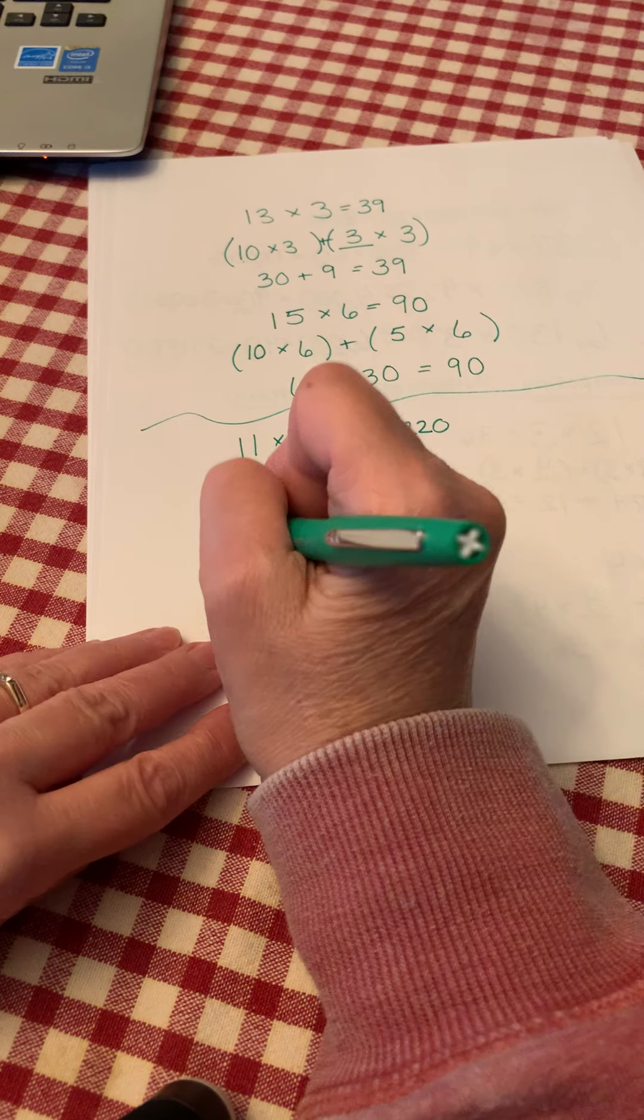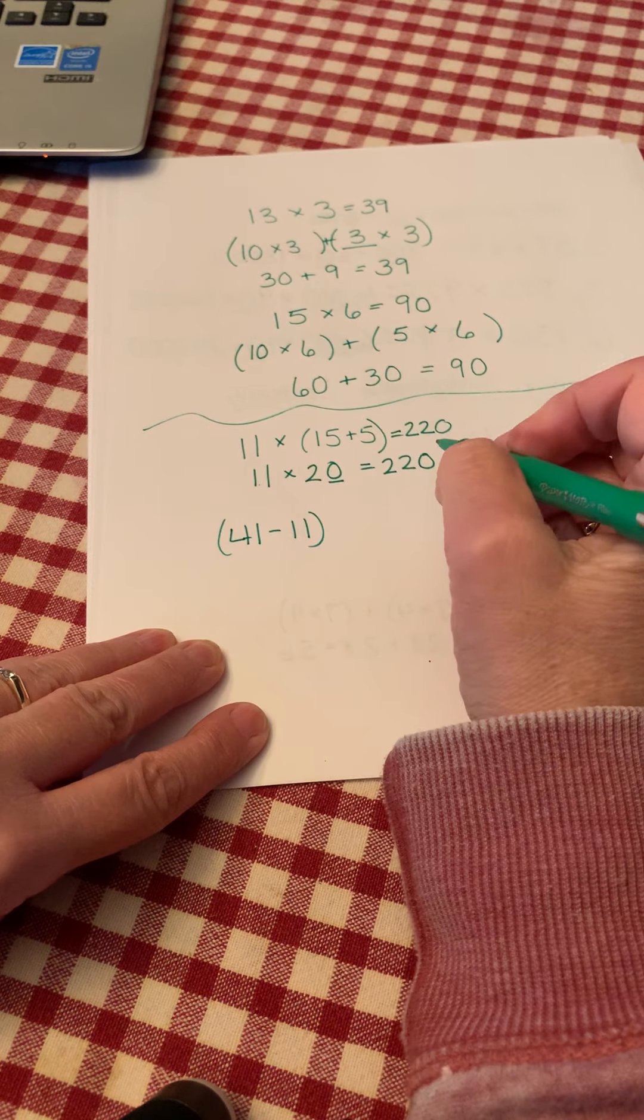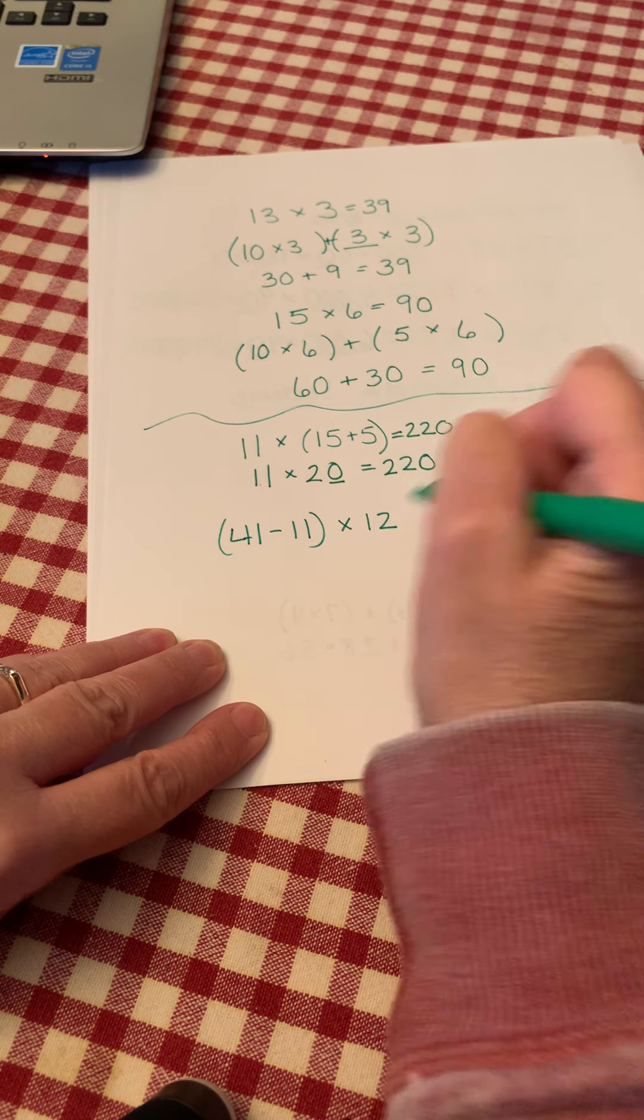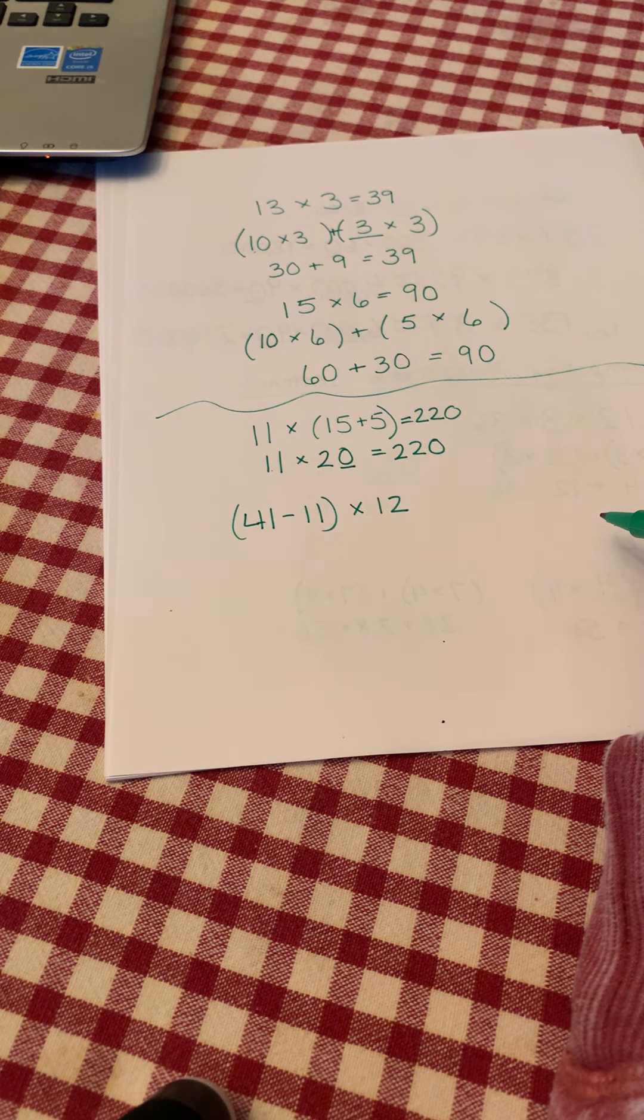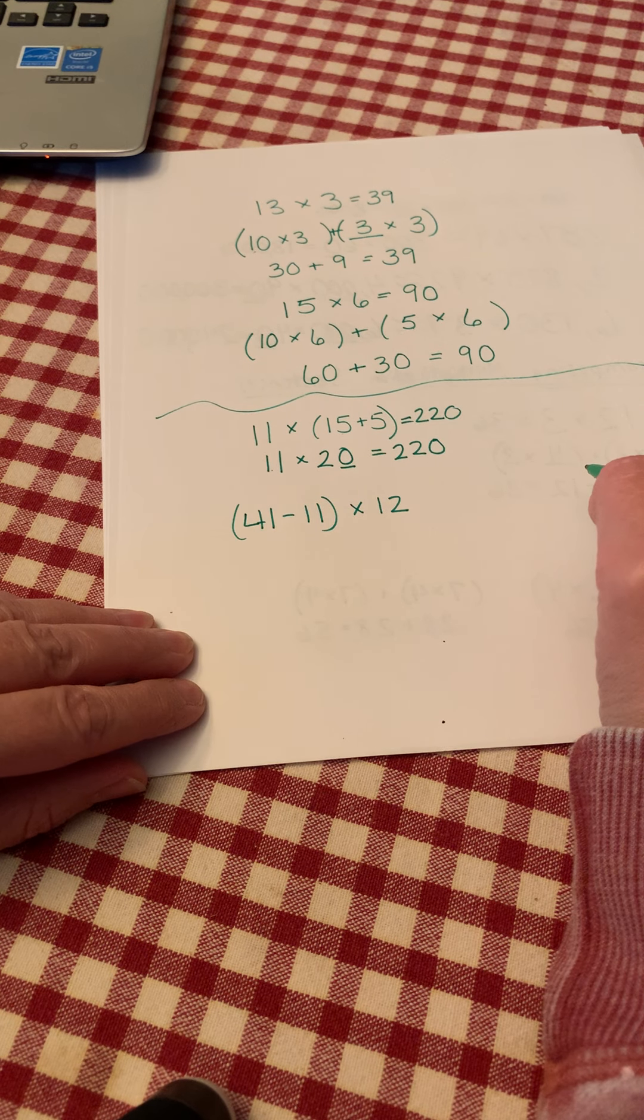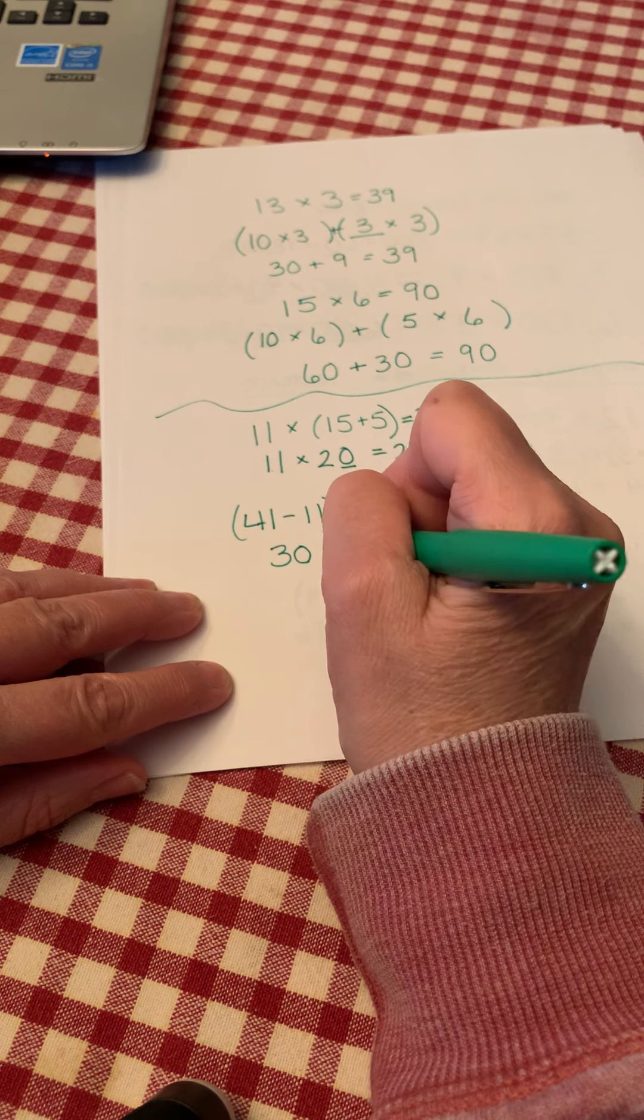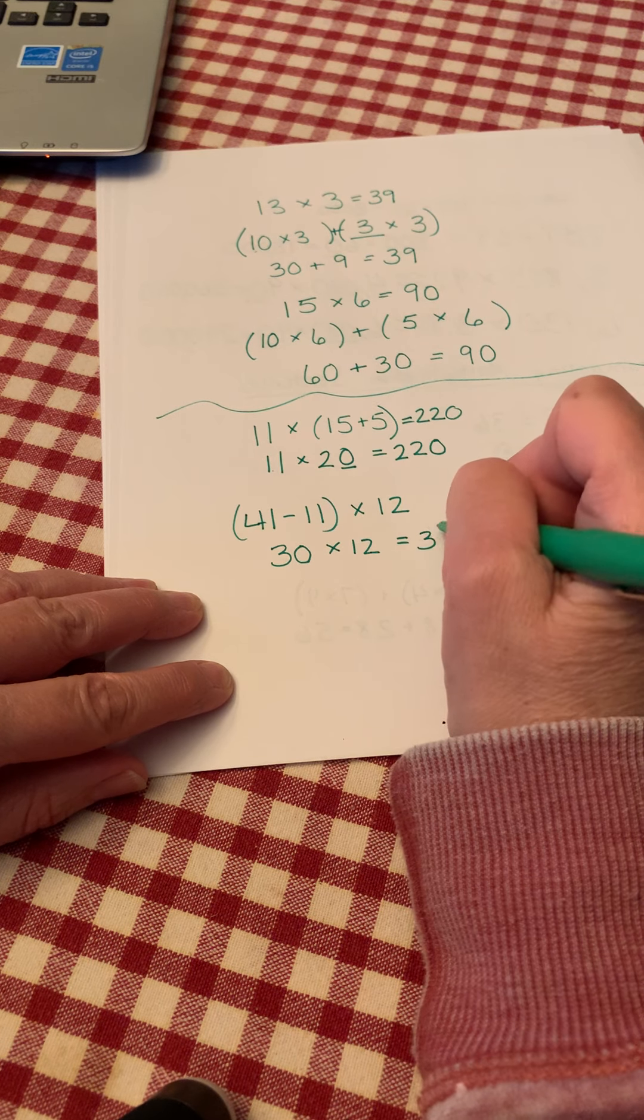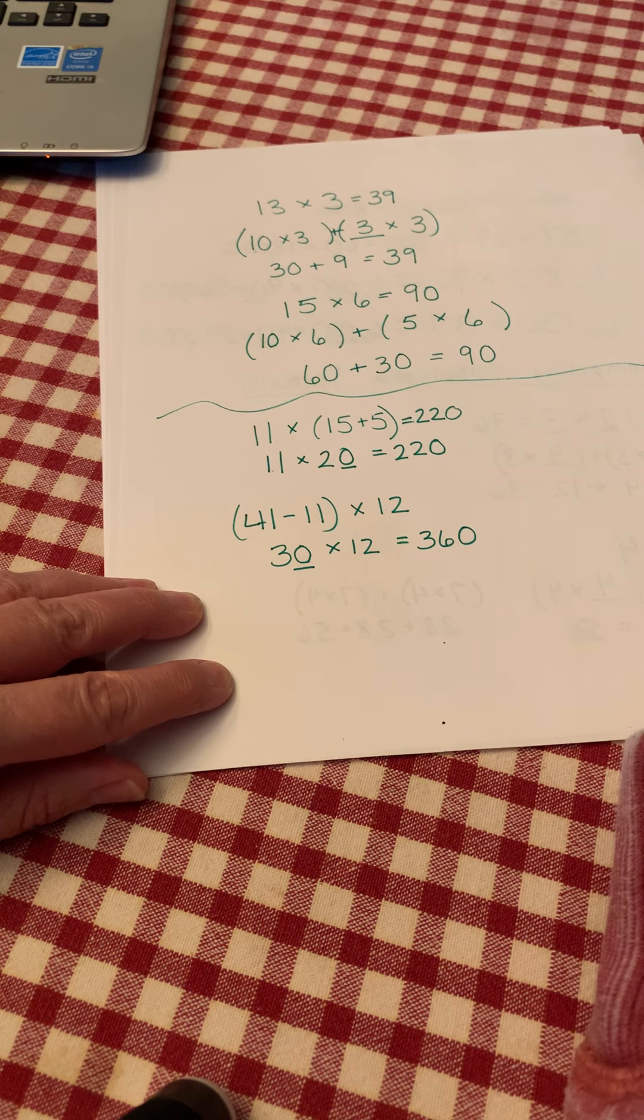Let's try another one. On your paper, write 41 minus 11 inside of parentheses, the difference of 41 and 11 times 12. Press pause, solve this problem, press play when you're ready to check your answer. Okay, for this one I said 41 minus 11 is 30. 30 times 12, 3 times 12 is 36 times 10 is 360.